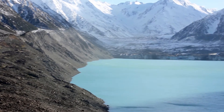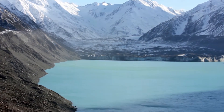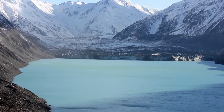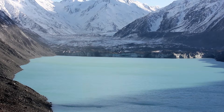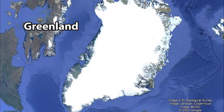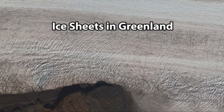A glacier is a moving river of ice on land. There are two types of glacier. Continental glaciers are massive amounts of ice that cover continents such as Antarctica or Greenland. 95% of ice on earth is locked up in continental glaciers.